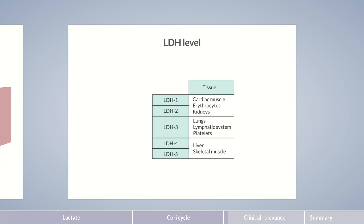Lactate dehydrogenase is not only important for energy metabolism, it's also clinically relevant. Its concentration in blood serum — the LDH level — can be easily determined and used for diagnostic purposes. The LDH level measures the combined amount of all LDH isoenzymes in serum and is low in healthy individuals, usually between 45 and 200 units per liter. An increase in LDH levels can be due to several causes. First, in vitro hemolysis of erythrocytes during blood collection and handling should be excluded. Otherwise, elevated LDH levels indicate cell damage in the body.